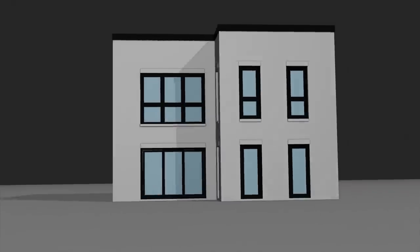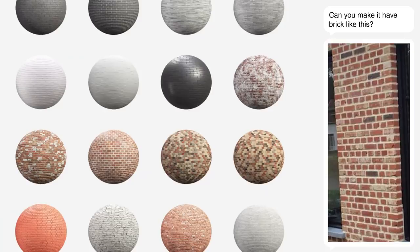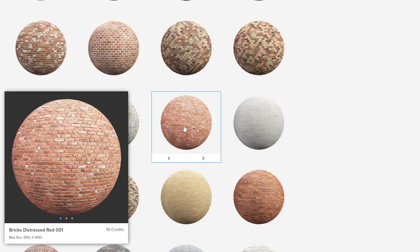The client wants the building to have brick like this, but after searching online you can't find any brick texture that looks like that. So you take the closest match into Photoshop and do some Frankensteinian surgery to make it look close.